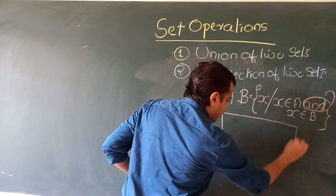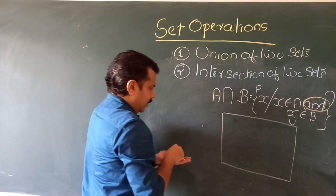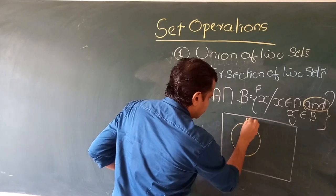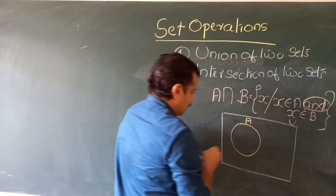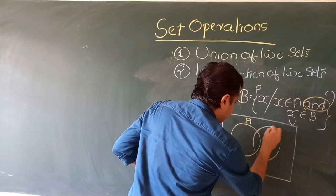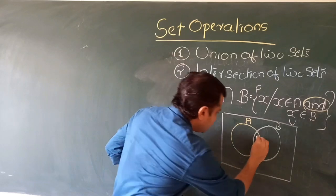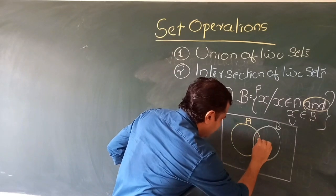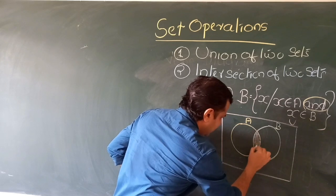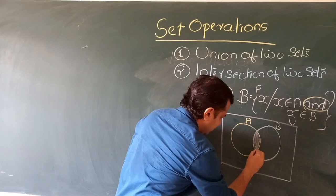The key difference from union: in union we use 'or' — either set A or set B — while in intersection we use 'and' — the element must be in both set A and set B. If we draw the Venn diagram with a universal set containing circles for set A and set B, the intersection A ∩ B is the overlapping region that is common between the two circles.